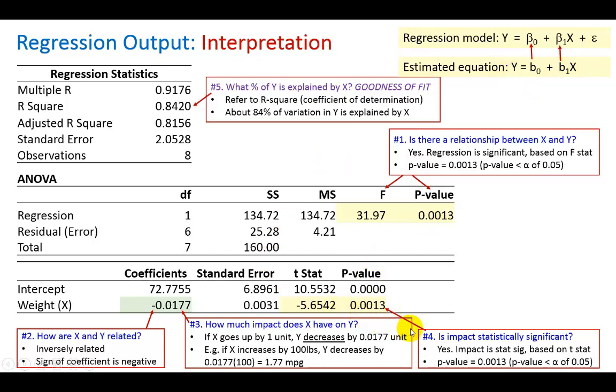That's about it in terms of the tests of significance. But one more thing is the measure of goodness of fit which is question number five. What is the percentage of explanation provided in this regression?